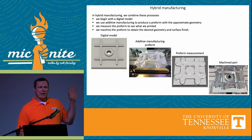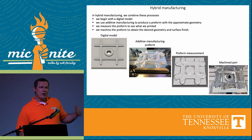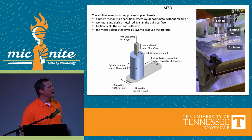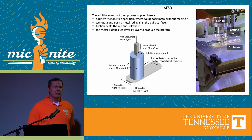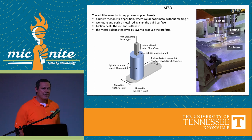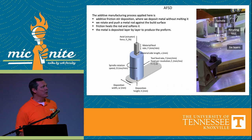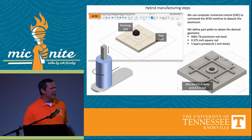I'm going to tell you about the sequence of events required to make a part that starts with a digital model and ends with the final part. The additive technique we're using is called additive friction stir deposition. We have a metal rod that's being forced through a rotating spindle against the surface, which generates frictional heat that softens the material and enables us to put it down layer by layer.